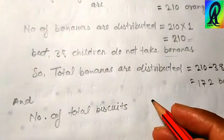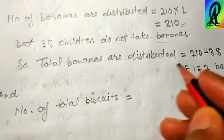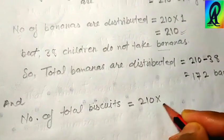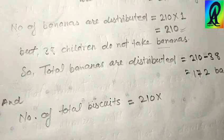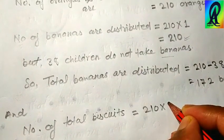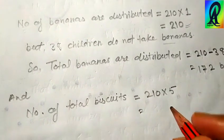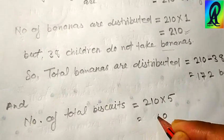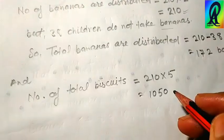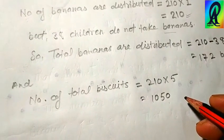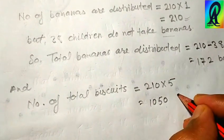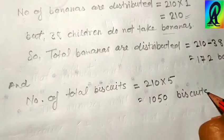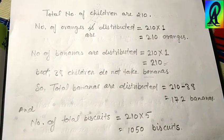Number of total biscuits distributed equals total children, 210, and each child takes five biscuits. Multiplying 210 by 5, we get 1050. So total biscuits distributed are 1050. Note this down.